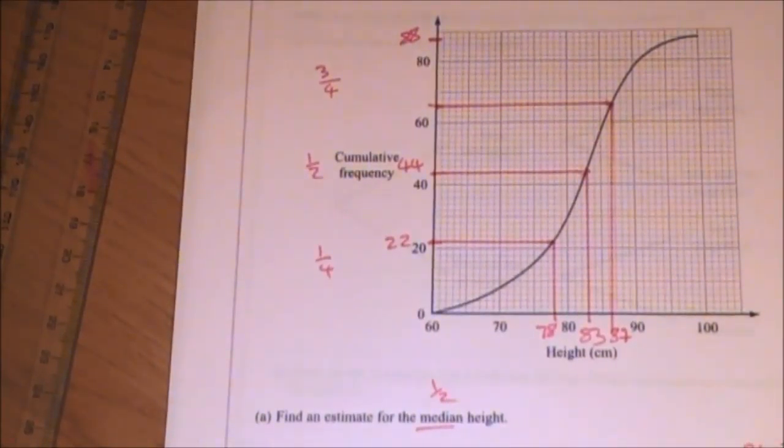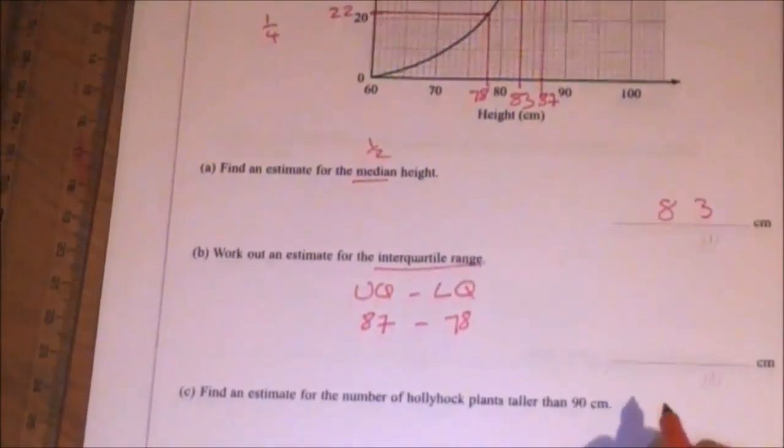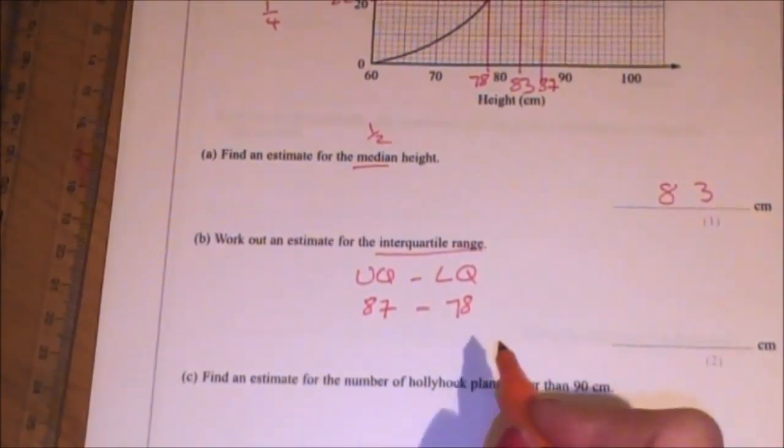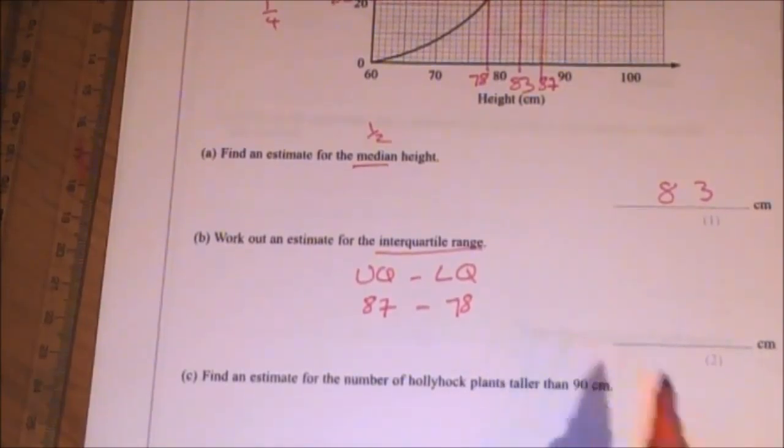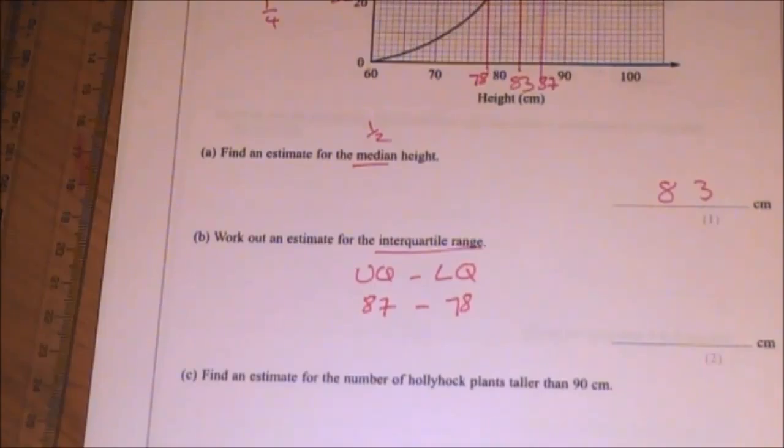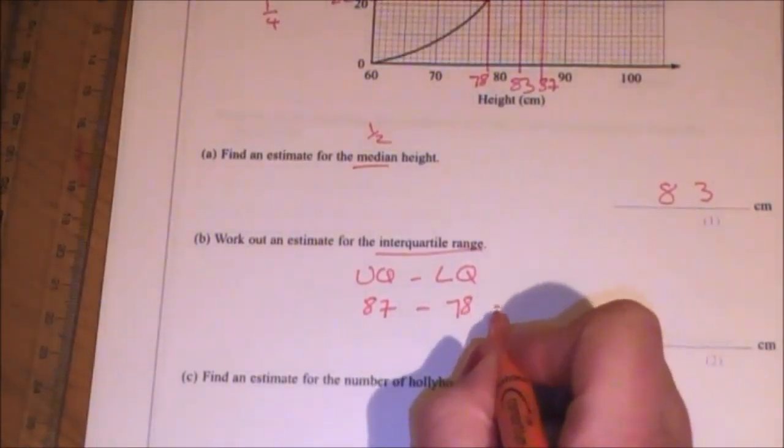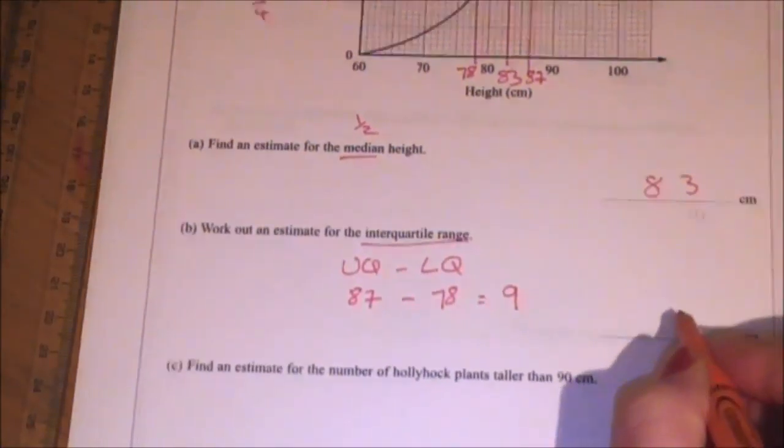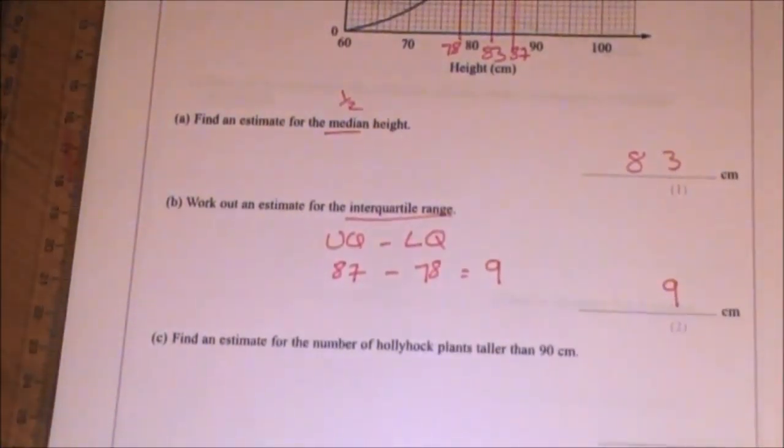So I end up with 87, take away, sorry, 87 take away 78. If you are not very good at taking away, then don't forget this is a calculator paper. Sometimes it's not worth the risk of getting something wrong. But 87 take away 78 is 9. So the interquartile range is 9.